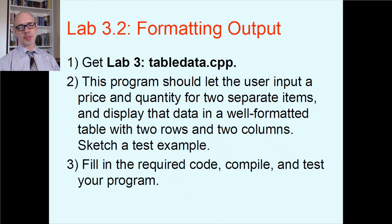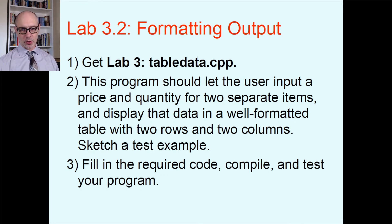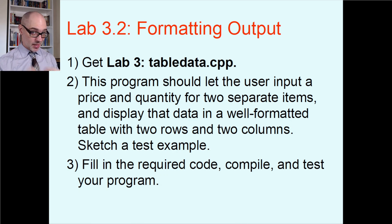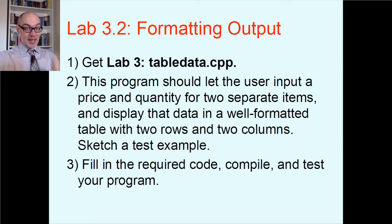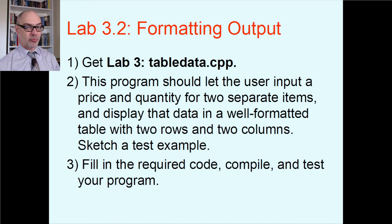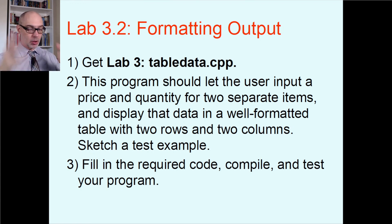For my in-person classes, we would do a table on formatting output. The program should let the user input a price and a quantity for two separate items and display that data in a well-formatted table with two rows and two columns — similar to the IO manipulation example. We would definitely want to use setprecision for money decimals and setw to make sure numbers are lined up as expected. Keep that in mind for future assignments — if any assignment says to print information in a table format, look back here and use setw to get your columns lined up nicely.